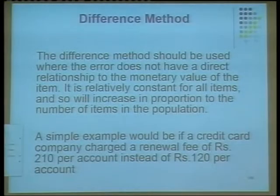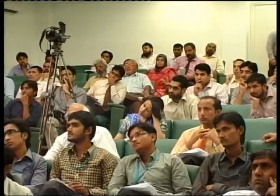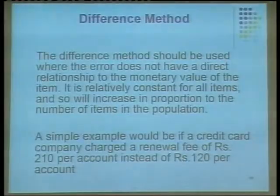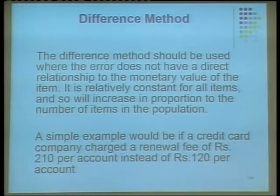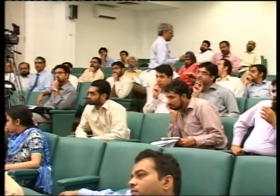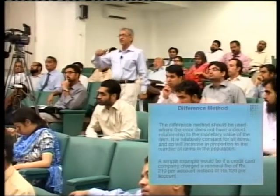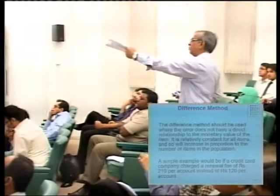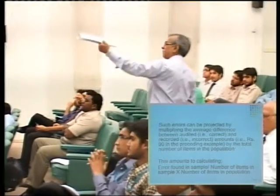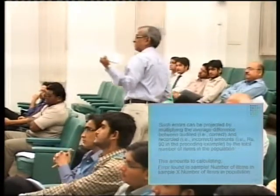The difference method is very simple. It should be used where the error does not have a direct relationship with the monetary unit. For example, a transposition error — especially in the case of a computer, if we made a mistake it will constantly keep on repeating that mistake. A simple example would be: 210 per account instead of 120. So in this projection, we will simply multiply 90 by the total number of items.